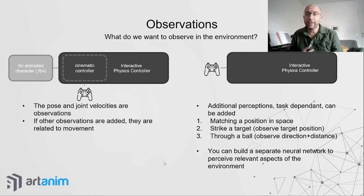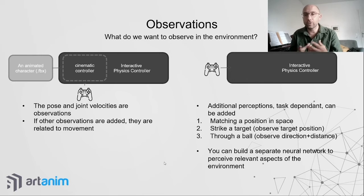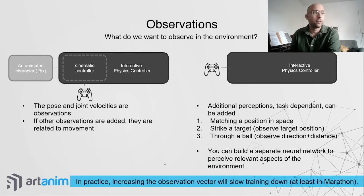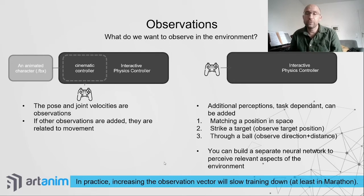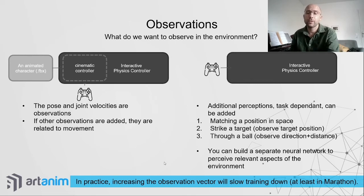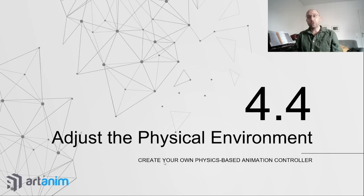As done in Deep Mimic, for high-dimensional perceptions like obstacles, you can build a separate neural network to contain a representation of those aspects. In practice, you should be aware that increasing the observation vector slows down training significantly in the framework we've explored, so if you increase observations, training will take much longer.